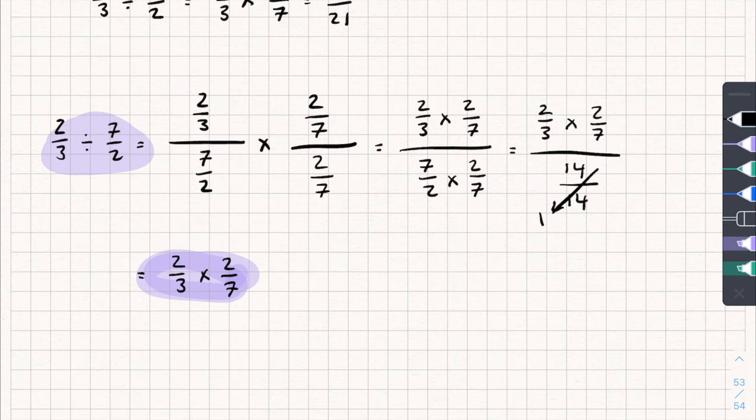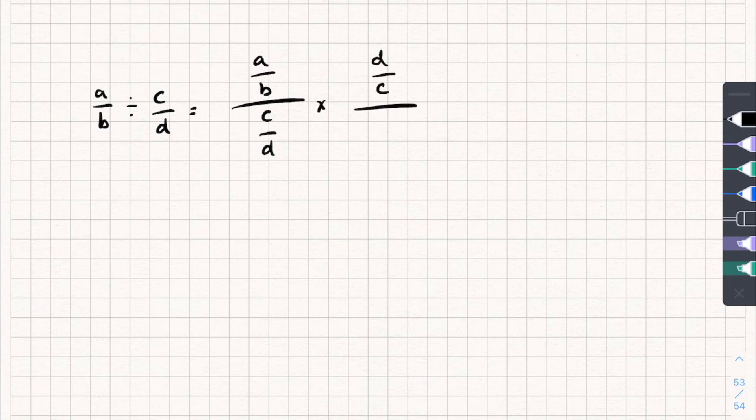If you want to show it for more like general case, where we're not using numbers, we can. So we could say, say I had A over B divided by C over D. Well, that's going to be equal to A over B all divided by C over D. And we can do the same thing again, multiply the top and bottom by the reciprocal of the denominator. So D over C divided by D over C.